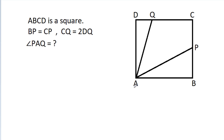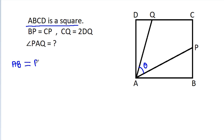In this video, we have given that ABCD is a square, BP is equal to CP, and CQ is 2 times DQ. We have to find angle PAQ. Suppose theta and ABCD is a square, so AB will be equal to BC will be equal to CD will be equal to DA. Suppose each side equals a.